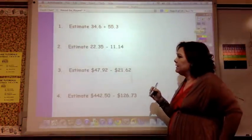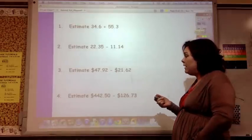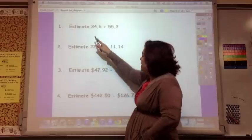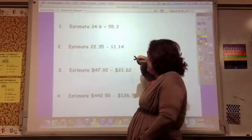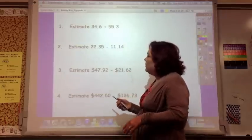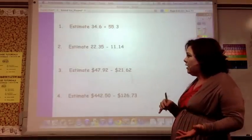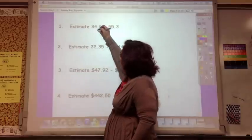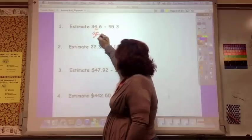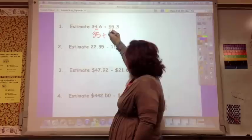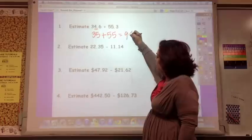Okay. So now we're going to look at estimating. And this really comes into play whenever you're looking at money. If you were to estimate thirty-four dollars sixty cents and fifty-five dollars thirty cents, you could go to the nearest dollar or to the nearest ten dollars. So to the nearest dollar would be looking at this. And so six would make the four go up to thirty-five, and three would make the fifty-five stay the same. So fifty-five plus thirty-five is ninety.